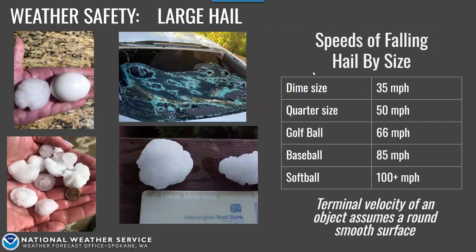Lightning can strike as far as 10 miles away from a thunderstorm, and more than 50% of lightning deaths occur after the storm has passed — you can still be struck up to 30 minutes after the storm ends. Go indoors into a sturdy building or a vehicle with a hard top. When thunder roars, go indoors. Lightning fatalities during outdoor sports occur most during soccer and golf, so seek shelter and wait a full 30 minutes after the last rumble of thunder before going back outside. Large hail falls at high speed and you do not want to be struck by golf ball-sized hail.